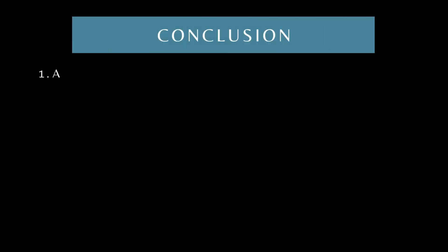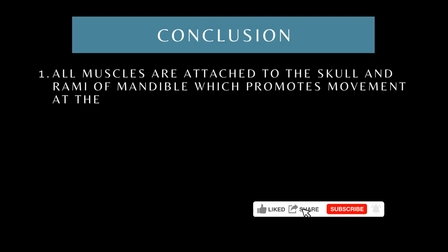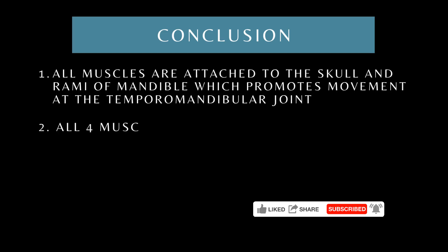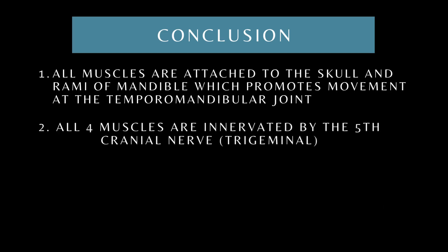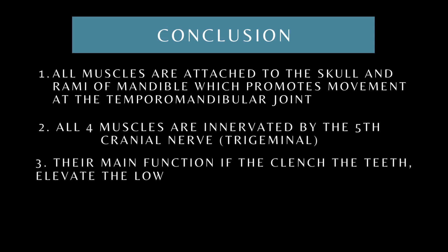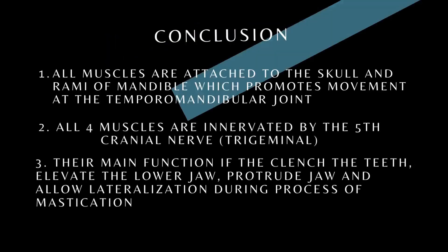In conclusion, all muscles are attached to the skull and ramus of the mandible, which promotes movement at the temporomandibular joint. All four muscles are innervated by the fifth cranial nerve, the trigeminal. Their main function is to clench the teeth, elevate the lower jaw, protrude the jaw, and allow lateralization during the process of mastication.